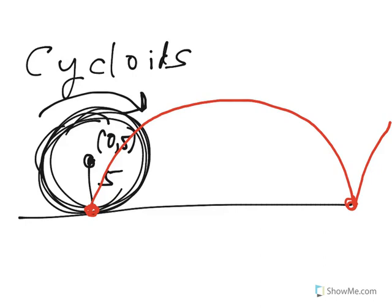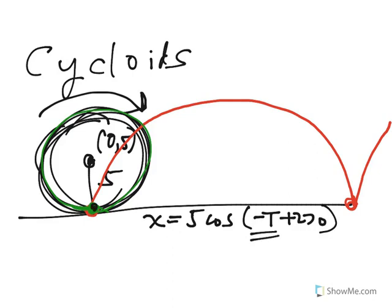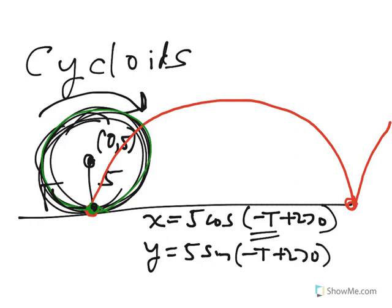Now, imagine that instead of moving to the right, the wheel was just going around in a circle. That would be x equals 5 cosine(-t + 270). That would cause it to start at 270, and the negative t is so the point can go clockwise. And y equals 5 sine(-t + 270). And we also need a plus 5 here because the center is always—